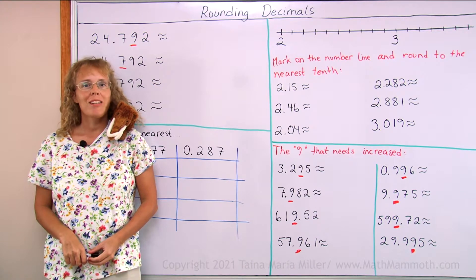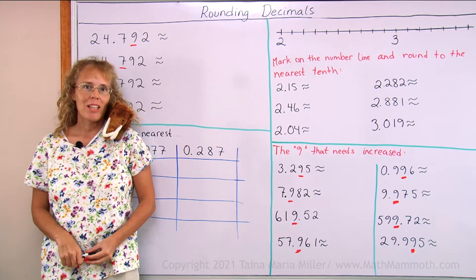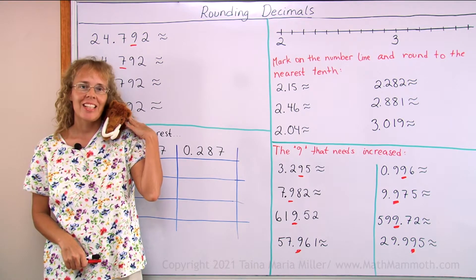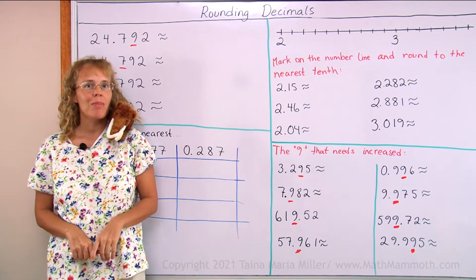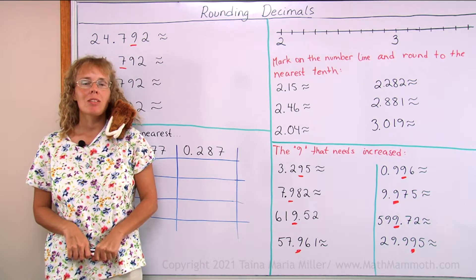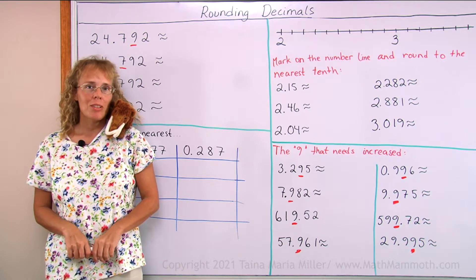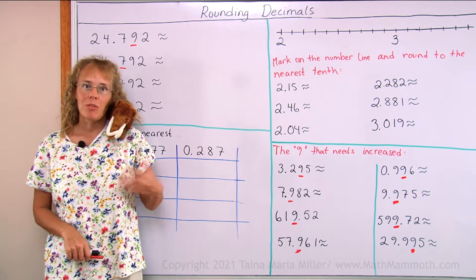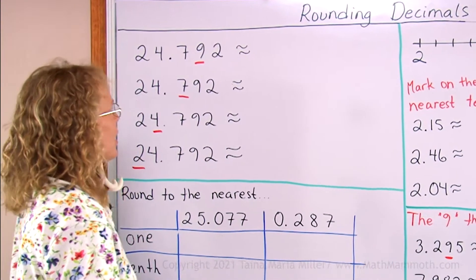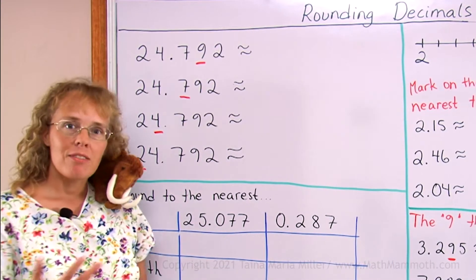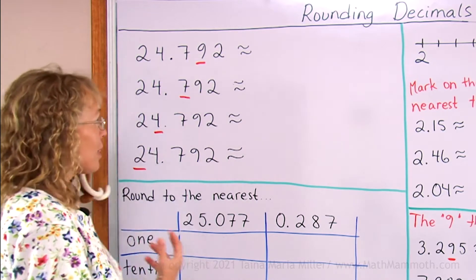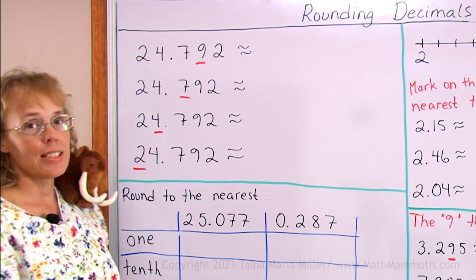Hello, my name is Maria Miller from MathMammoth.com and this is Mathie, my assistant and mascot. In this lesson we're going to study rounding decimals. Our decimals have up to three decimal digits, and you're familiar with rounding rules for whole numbers — the same thing happens with decimals.